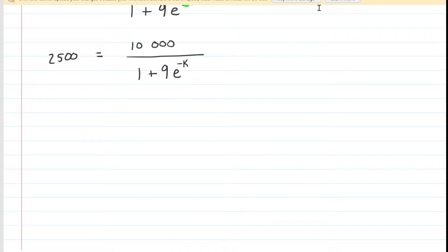Let's first clear our workspace. Next, we may wish to write the 2,500 over a 1. And what's kind of neat about that is it allows us to reciprocate both sides of the equation. So if we reciprocate the left side, we have 1 over 2,500. And if we reciprocate the right-hand side, we're basically just flipping it upside down, giving us this equation here.